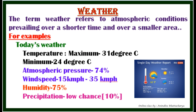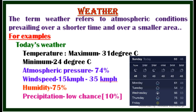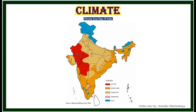For example, today's weather: temperature maximum 31 degrees centigrade, minimum 24 degrees centigrade, atmospheric pressure 74 percent, wind speed 15 to 35 kilometers per hour, humidity 75 percent, and precipitation — low chances, only 10 percent.